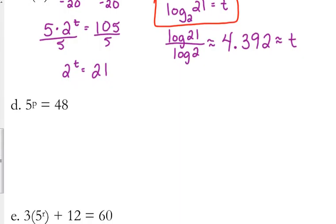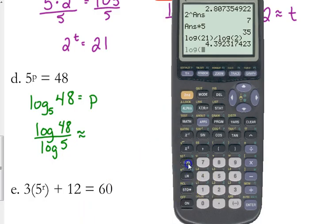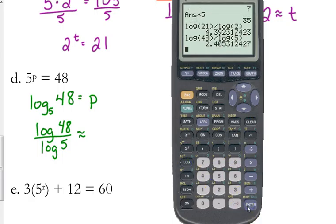All these have been base 2. Let's look at one that has a different base. Let's look at a base of 5. Nothing changes except for when you put it in log form, the little base is going to be 5. So 5 to the p is equal to 48. In logarithmic form, it's log base 5 of 48. So now, instead of dividing by the log of 2, we're going to divide by the log of 5. And we get 2.405 is approximately our value.